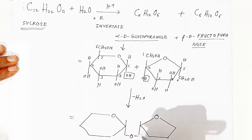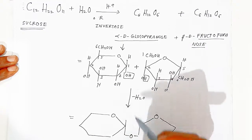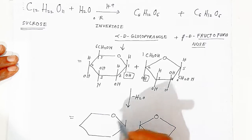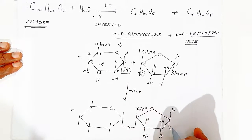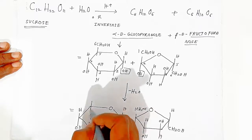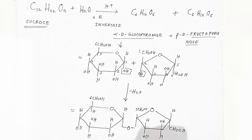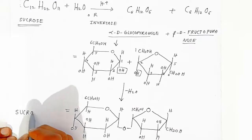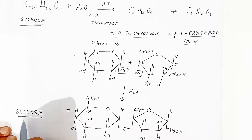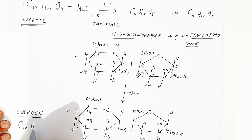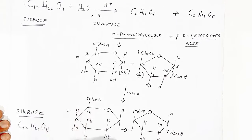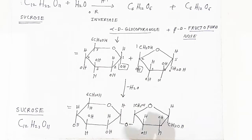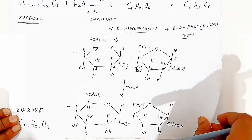This forms a glycosidic linkage by elimination of a water molecule. After filling all valencies, you get the complete structure of sucrose with molecular formula C₁₂H₂₂O₁₁. That is how the structure of sucrose is explained.